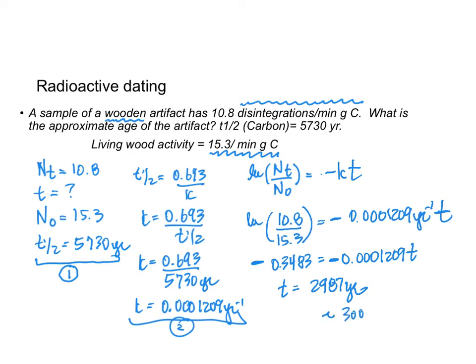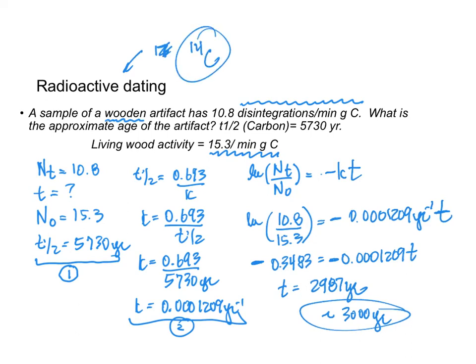Since this isn't the most exact method, the artifact is approximately 3,000 years old. This is called radioactive dating, and carbon-14 was used here, though other isotopes can also be used. To wrap up: radioactive decay is first order, described by ln(NT / N0) = −Kt, and allows us to find counts, rate constant, or age of a sample by using the half-life to find K.